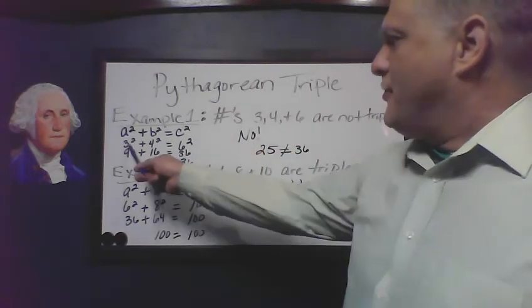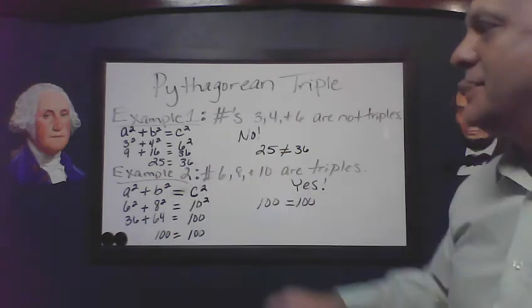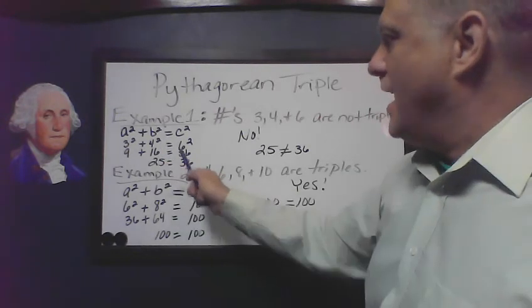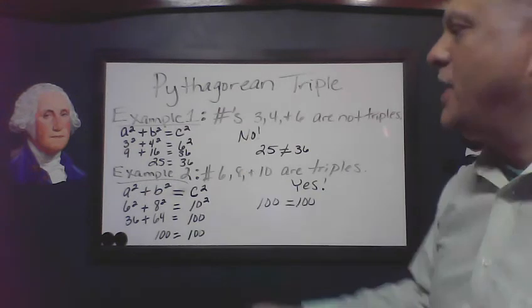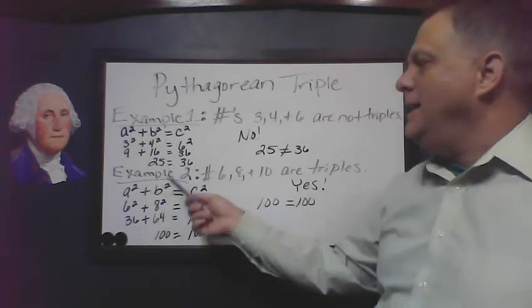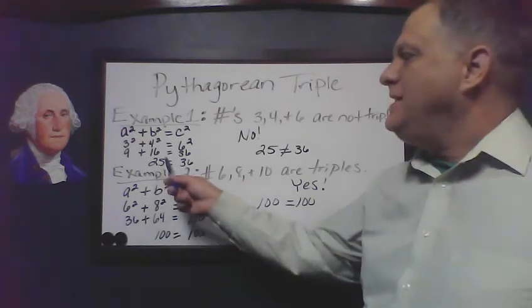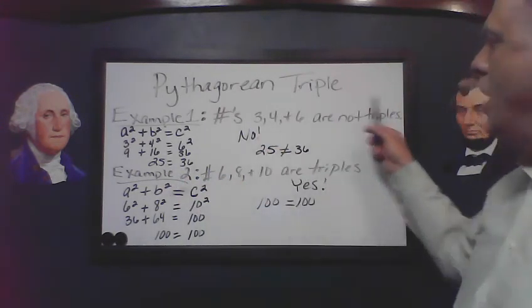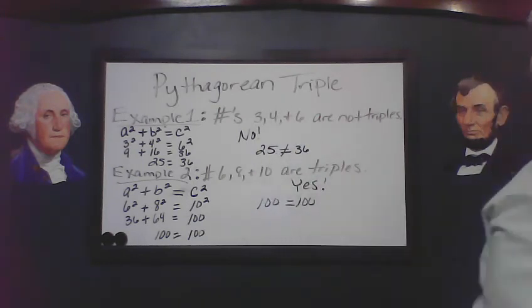So we're going to have 3 squared plus 4 squared equals 6 squared. Let's see if this side matches this side. 3 times 3 is 9, 4 times 4 is 16, equals 6 times 6 equals 36. So we have 25 equals 36. So no, these numbers are not going to be triples, because 25 does not equal 36.